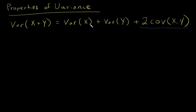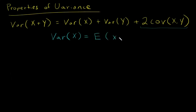Before I get into this proof, let's remember what covariance is by definition. And actually let's start by remembering what variance is by definition. The variance of a random variable X equals the expected value of the random variable X minus the mean of that random variable, squared. So it's the average squared distance from the mean.